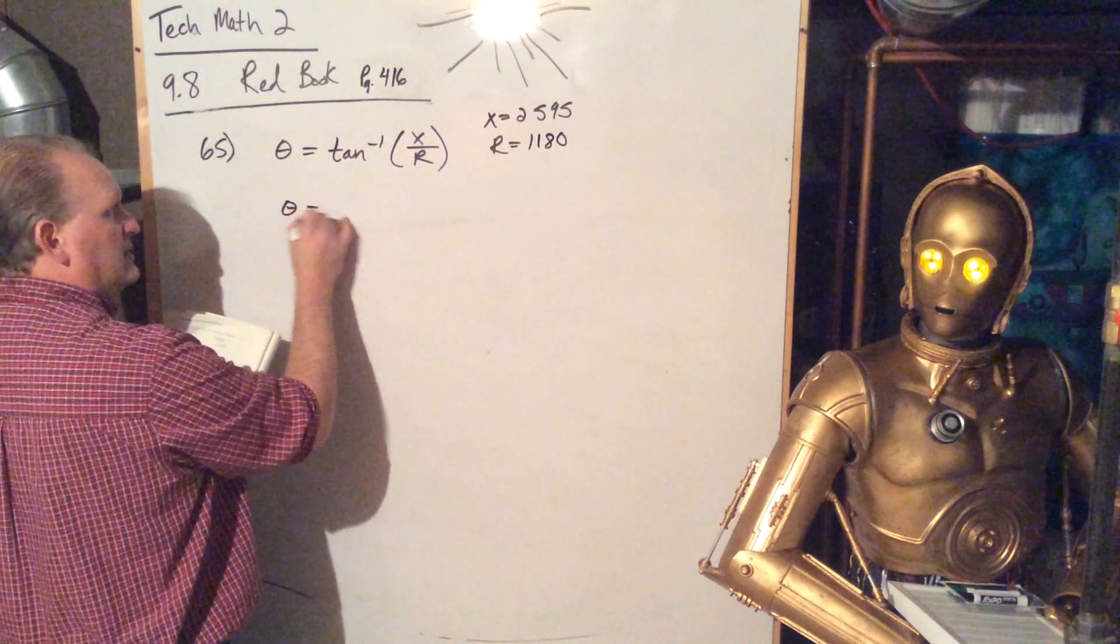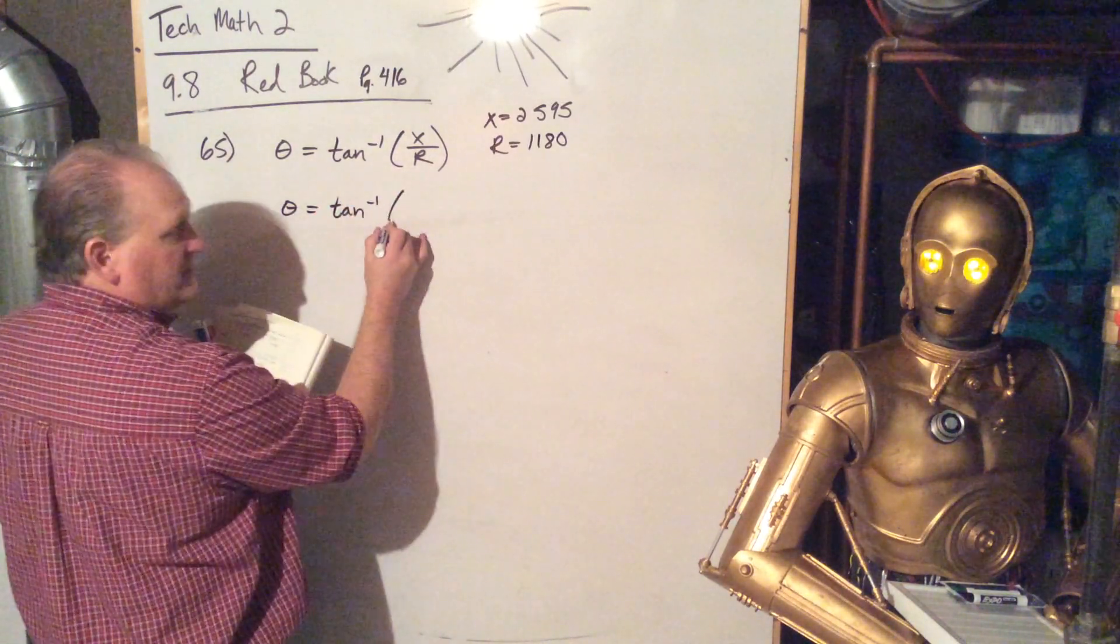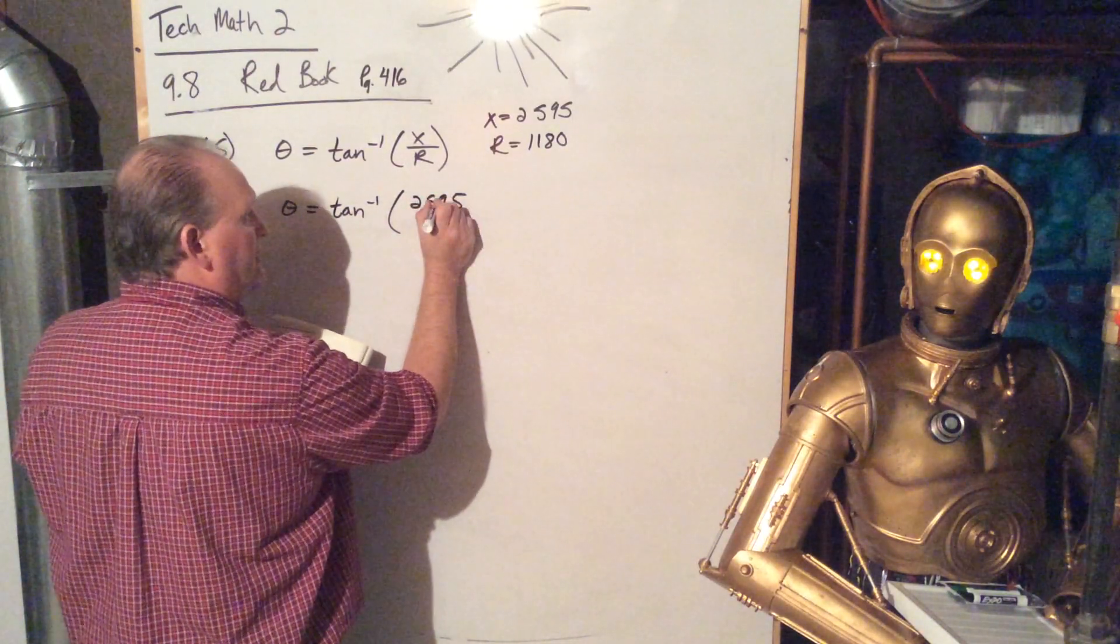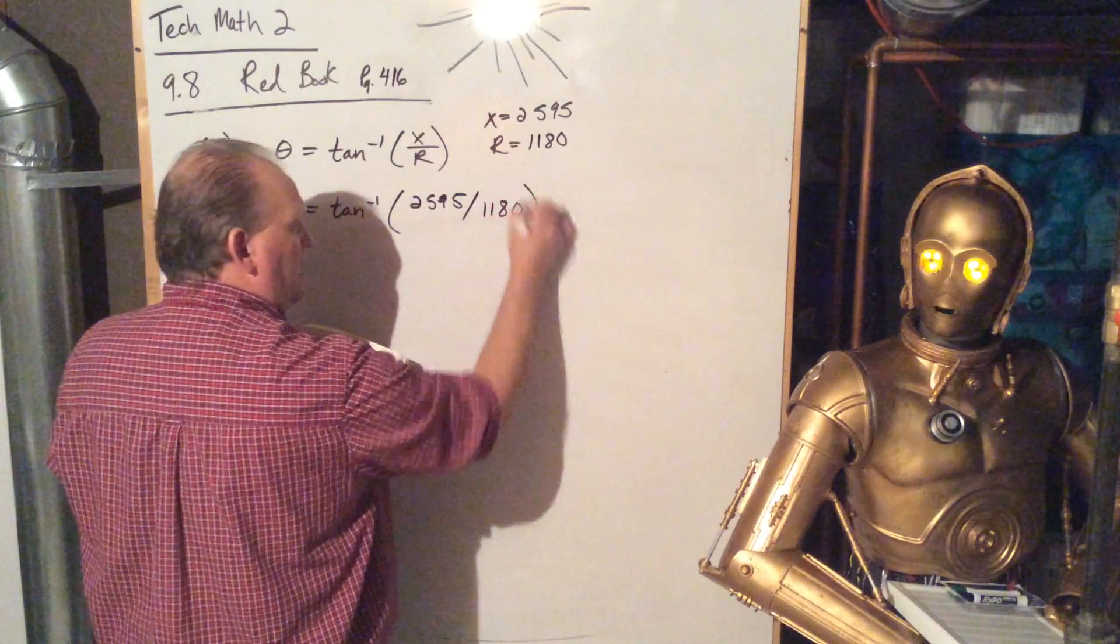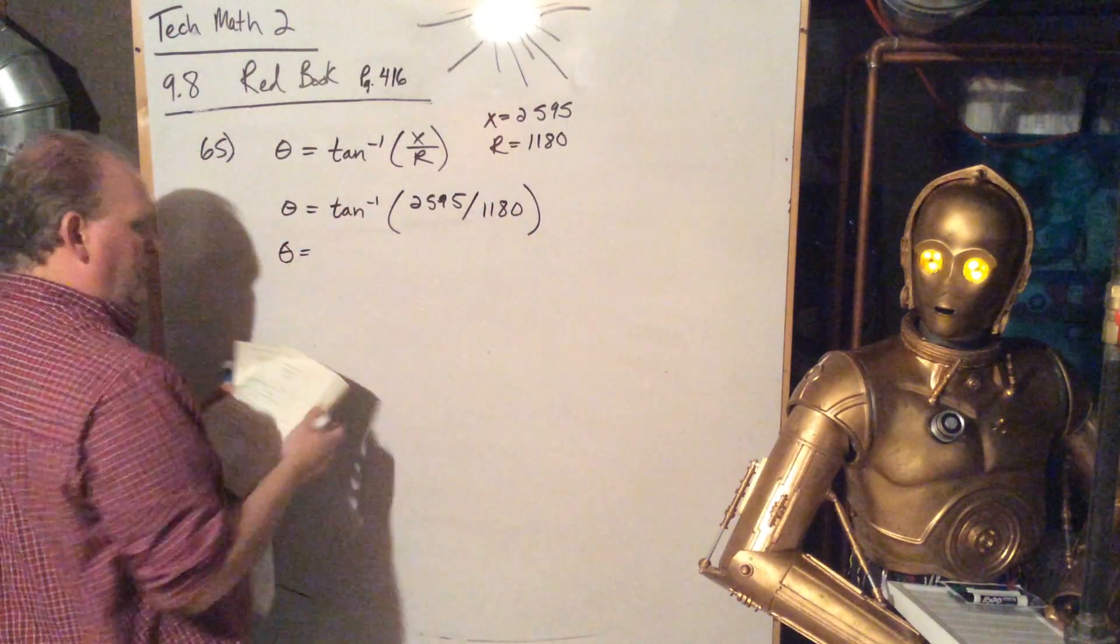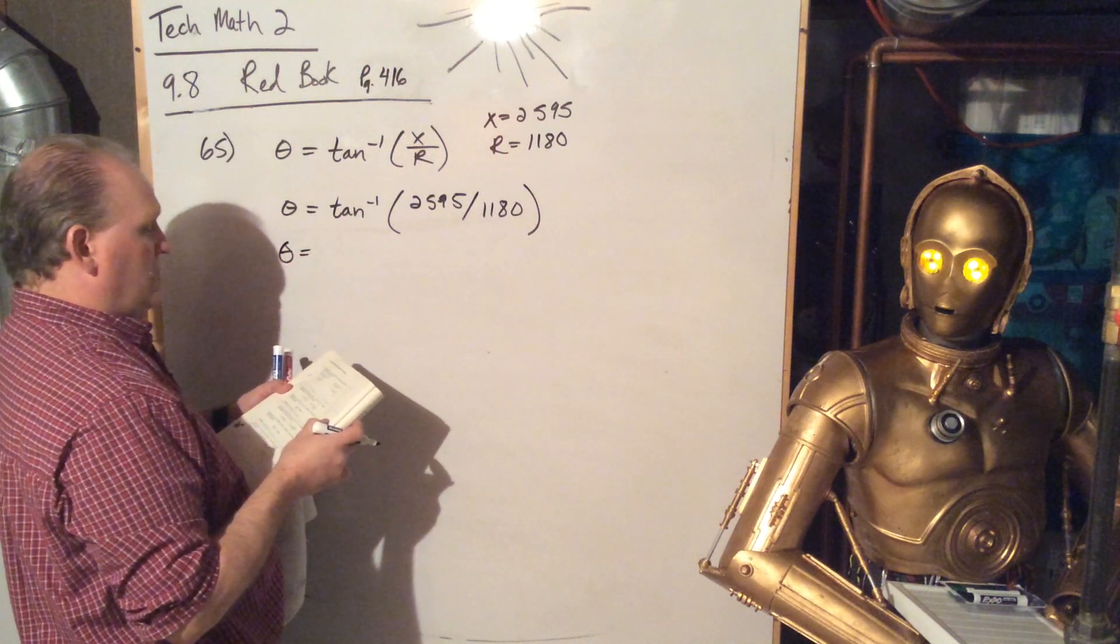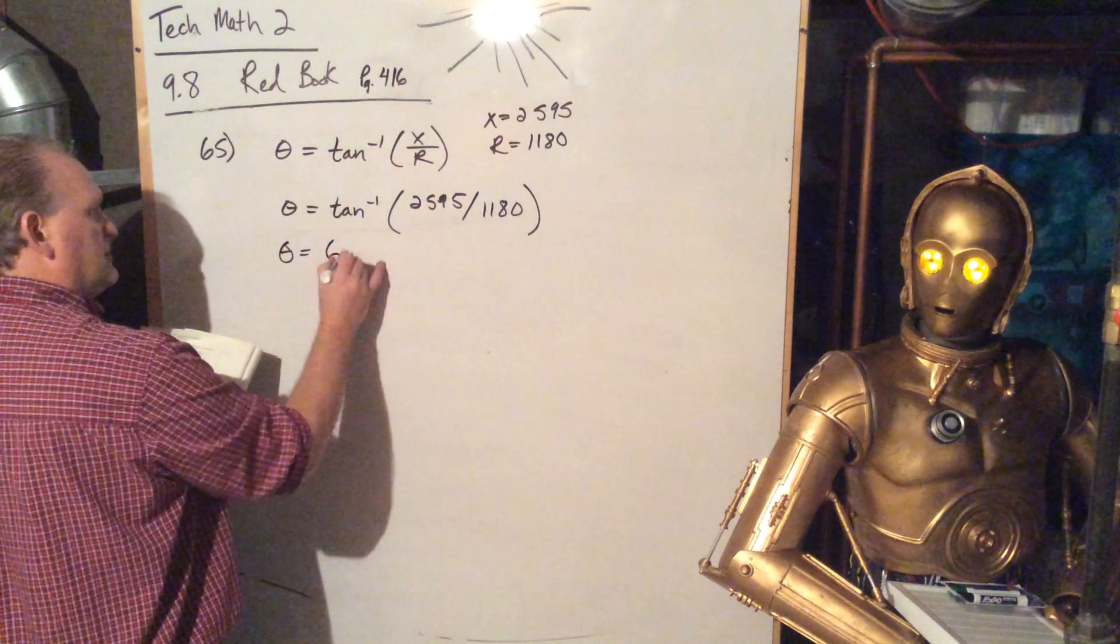Oops. And so then we were going to take, in our calculator, second tangent, that'll kick out arctangent, and then the parenthesis, and then do the 2595, do the divided by sign, 1180, end paren. And then hit enter, and that should kick out, let's see, what do they want, round to the nearest whole number degree, so we'll round that to 66 degrees.